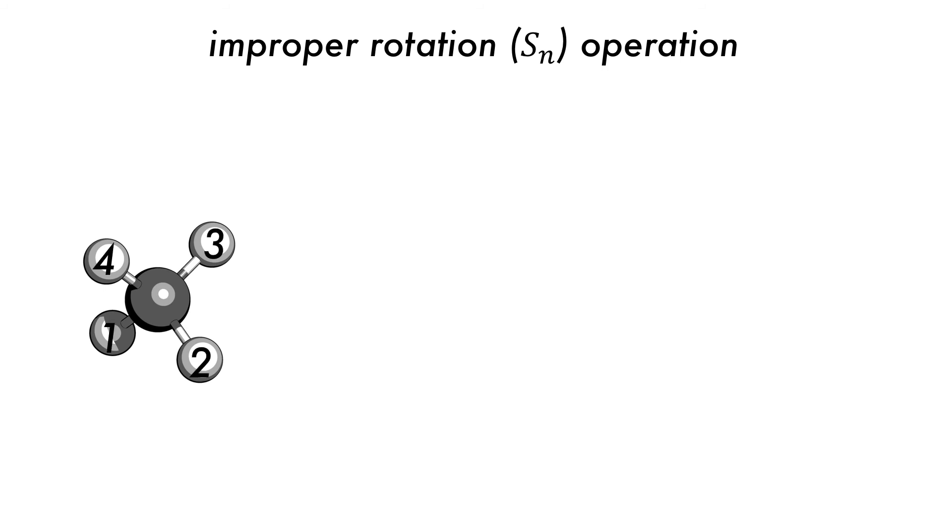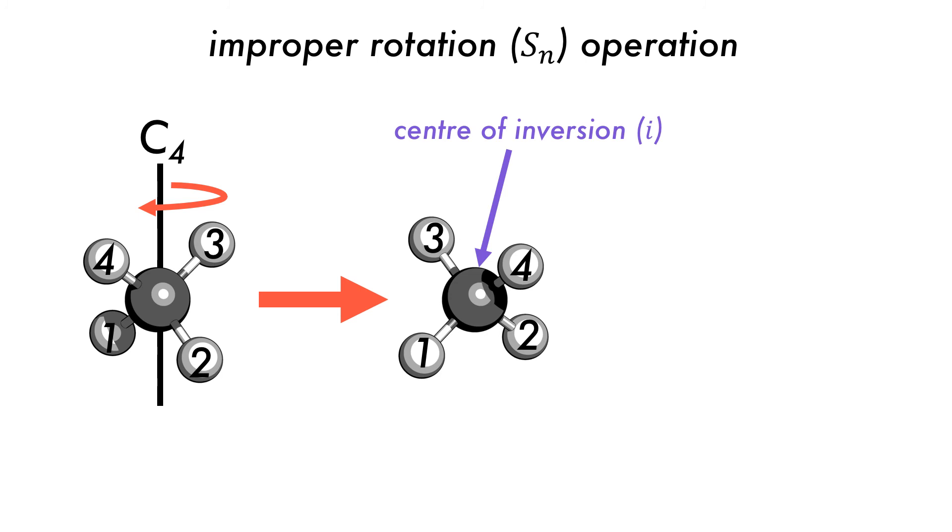Labelling the atoms will make it easier to follow the changes. First, the methane molecule is partially rotated by 90 degrees or a C4 rotation. After the rotation, we do an inversion operation to obtain a structure that is identical to the first but has had the hydrogen atoms interchanged by the operations.